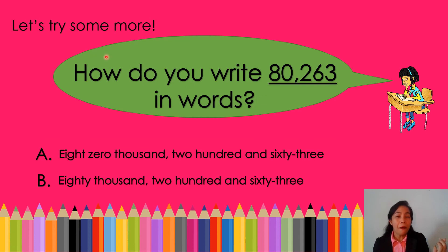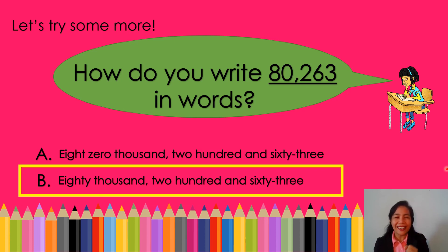Let's try some more. How do you write 80,263 in words? 80,263 in words — is it letter A or letter B? You are correct! The correct answer is 80,263, that's letter B.